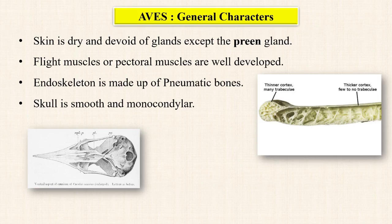Flight muscles, also called pectoral muscles, are very well developed in birds because they are adapted for flying — the muscles are comparatively very strong. The endoskeleton is made up of pneumatic bones. The bones of birds are hollow and filled with air, unlike solid bones of other animals. This is the speciality of bird bones — we call them pneumatic bones.